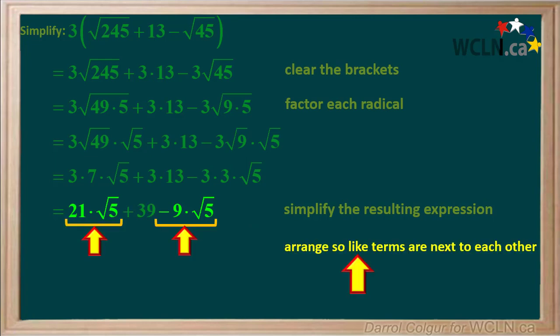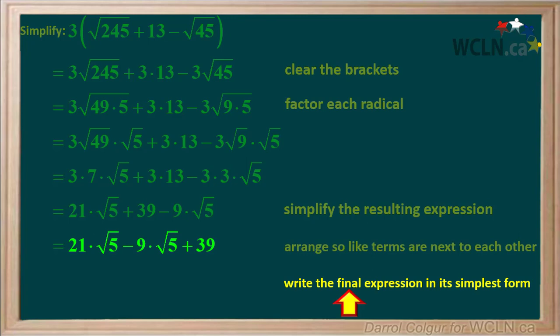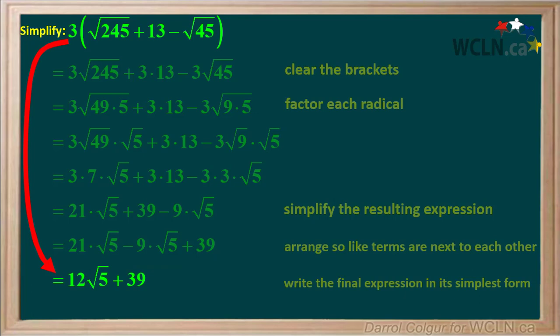21 root 5 and negative 9 root 5 are like terms, so the next step is to arrange the expression so these like terms are next to each other. Now the like terms are next to each other, so they can be easily added or subtracted. In the last step we write the final expression in its simplest form. 21 root 5 minus 9 root 5 is equal to 12 root 5, and we bring down the plus 39 beside it. So the original expression has now been simplified to 12 root 5 plus 39.